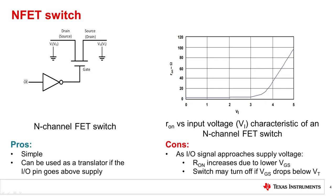When there is sufficient voltage applied to the gate with respect to the source, the switch becomes conductive and a voltage signal applied to the drain passes through without distortion. The gate-to-source voltage at which the NMOS begins conduction is known as the threshold voltage, V_T.